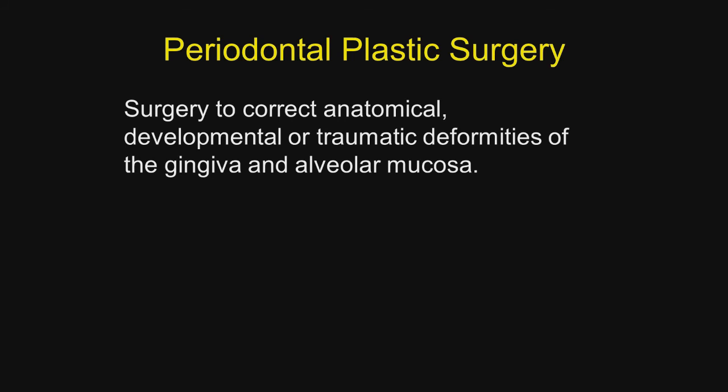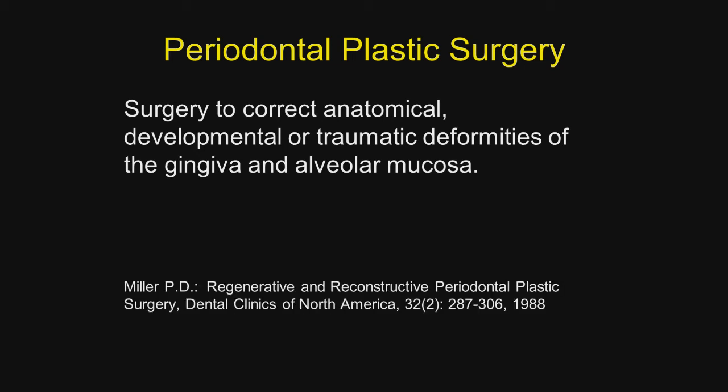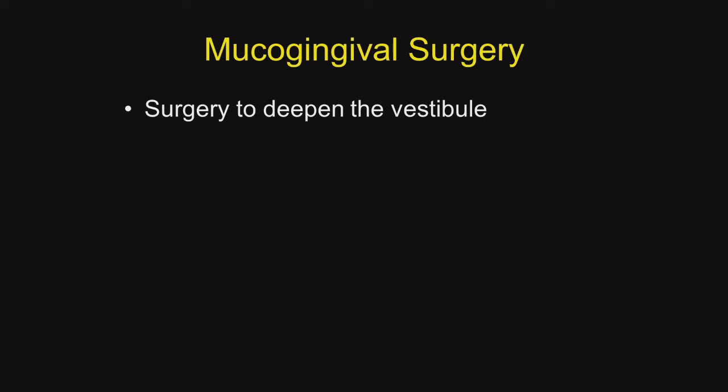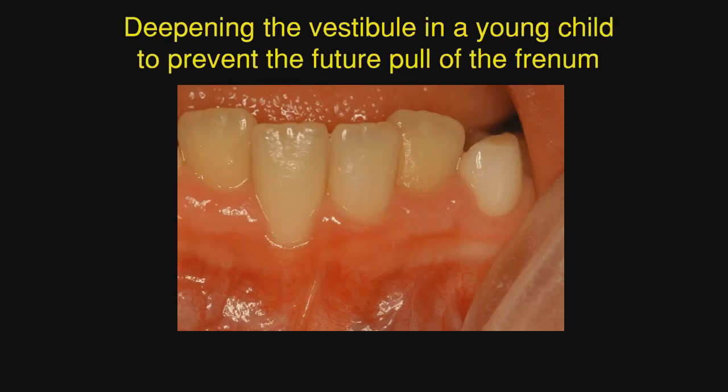Periodontoplastic surgery is defined as surgery to correct anatomical, developmental, or traumatic deformities of the gingiva and alveolar mucosa — a definition presented in the Dental Clinics of North America in 1988. Mucogingival surgery includes surgery to deepen the vestibule and treatment of the aberrant frenum.